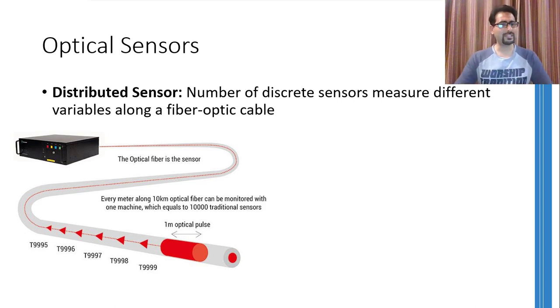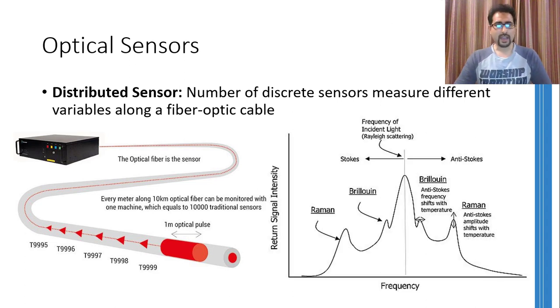If we draw the frequency spectrum of this reflected light signal, then it will look like this. This graph shows that the reflected light wave will have majority of the power concentrated around the frequency that was transmitted in the first place. However, we will see certain peaks at different frequencies as well.